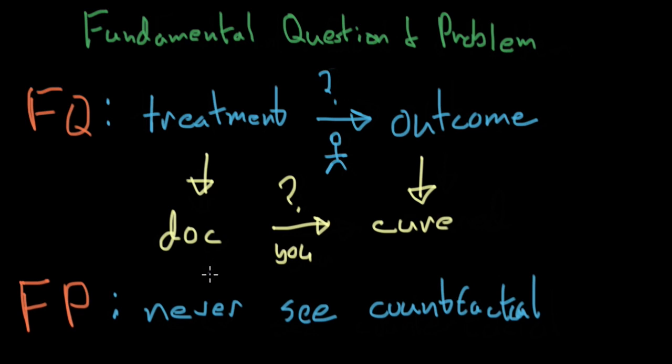Or if you went to the doctor and you didn't get cured, maybe there was no way you'd get cured regardless. This is the fundamental problem of causal inference.